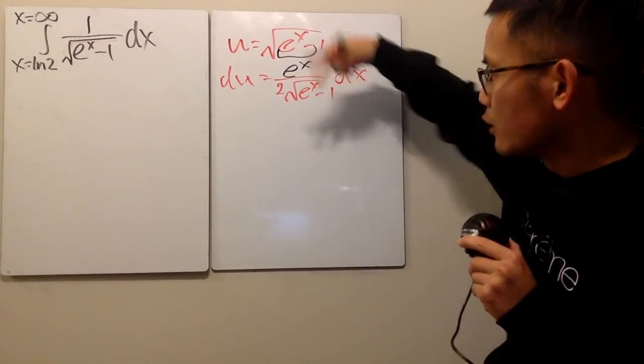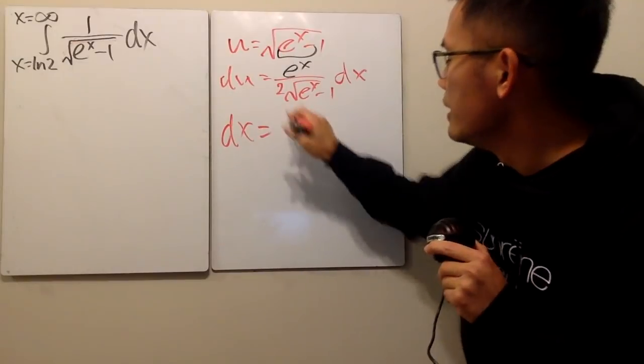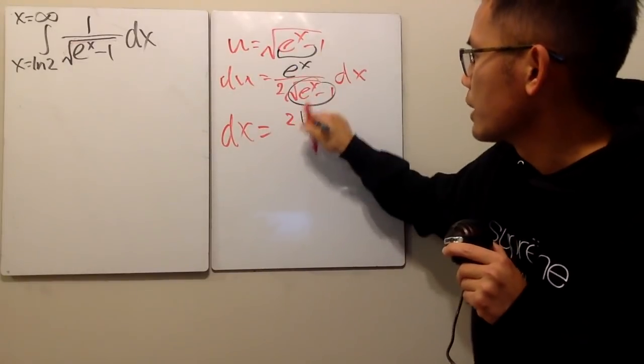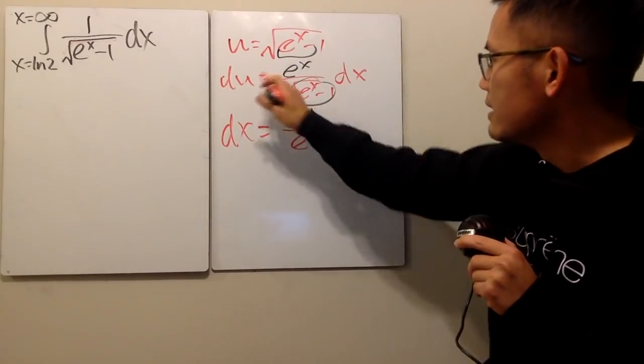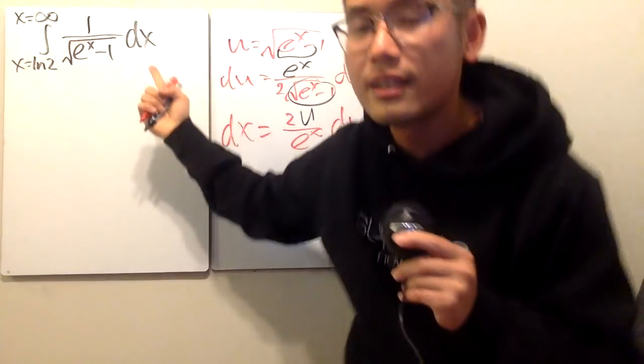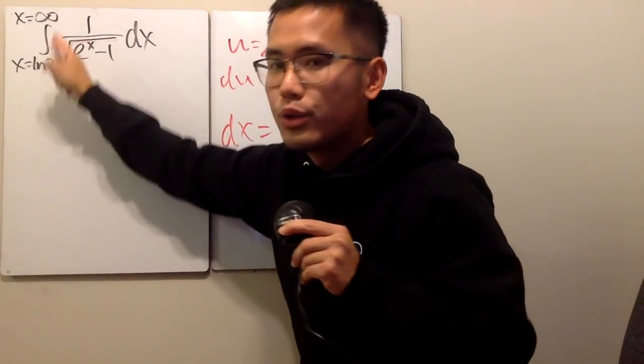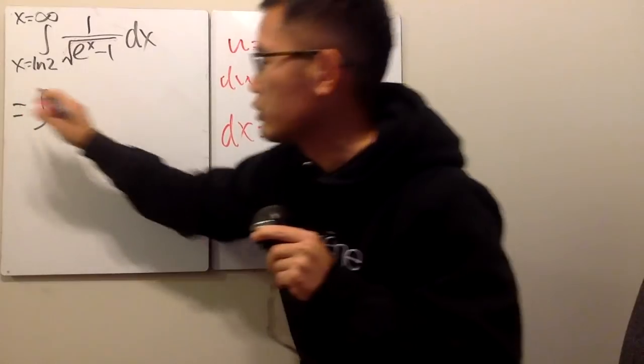I want to isolate dx and multiply the reciprocal both sides. We get dx is equal to 2, but this right here is the same as u, I put down u right here, over e to the x, and this right here we have the du. And now we have to take this to the u world, as you can see, x is ln 2 to infinity.